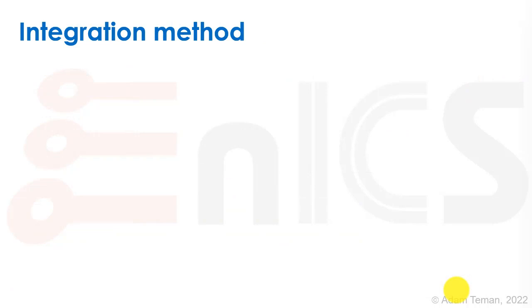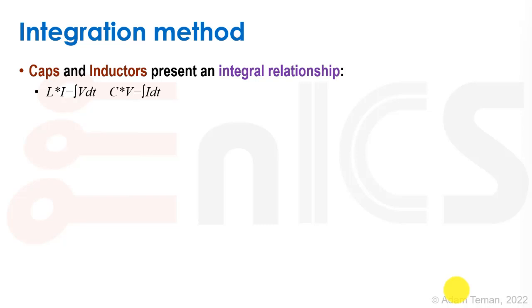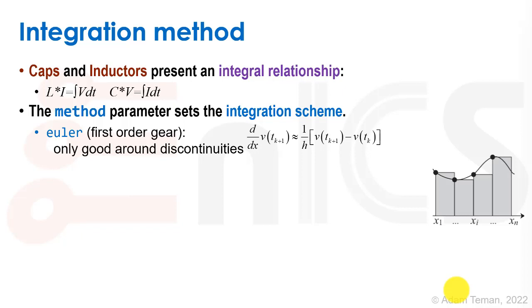There is a point called the integration method. Caps and inductors present an integral relationship. L times i equals the integral of v dt, and C times v equals the integral of i dt. We can play around with how the integration is done using the method parameter. The first order gear or Euler type of method is only good around discontinuities. It's basically what we learned in early algebra, where to integrate what's going on around this curve, we use these types of rectangles. d to dx of v tk plus 1 equals 1 over h times v tk plus 1 minus v tk.